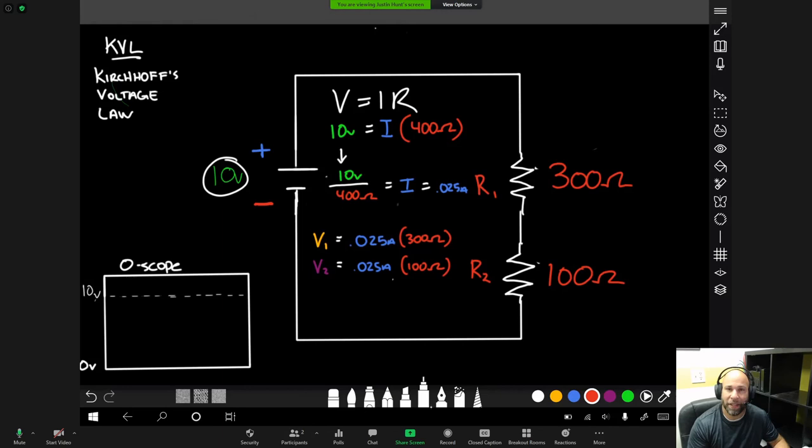So we want to look at getting voltage drop one which is this resistor right here. We already know that V1 is going to be equal to this consistent current through a series circuit of 0.025 amps times 300 ohms and lo and behold that gives us 7.5 volts. I want to throw a negative in here and the way I think about it is we started with 10 volts and we are going to drop 7.5 volts through R1.